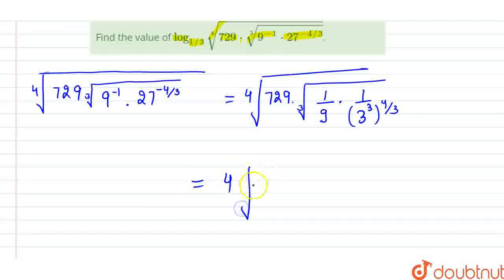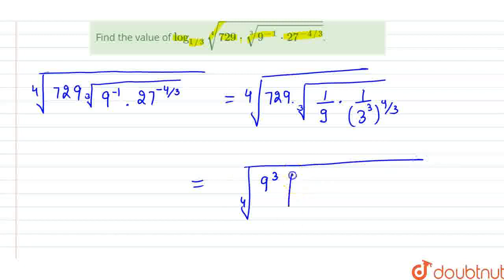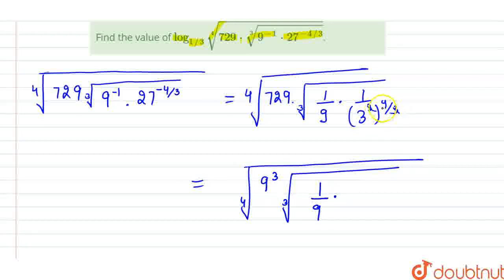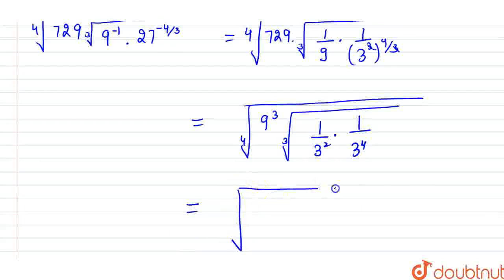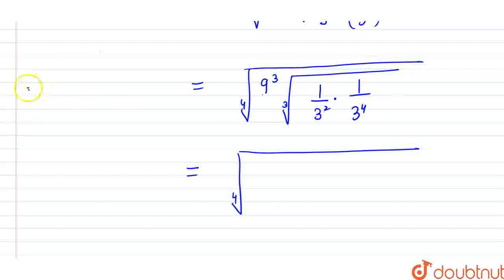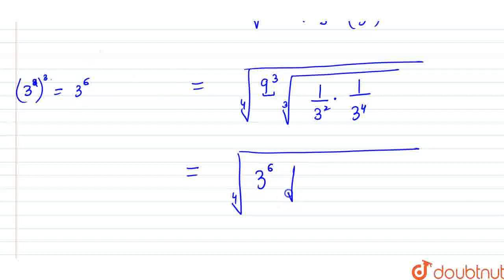Now let us write everything in terms of base 3. The 4th root of 729: since 729 is the cube of 9, and 9 is 3 squared, 729 equals 3 to the power 6. The cube root of 1 by 9 gives 1 upon 3 squared, and we also have 1 upon 3 to the power 4. Since the bases are the same, the powers add, giving us 3 raised to the power 6 in the numerator.